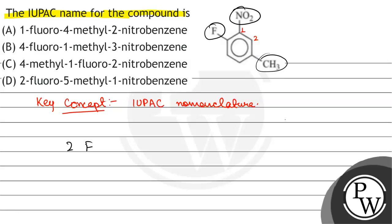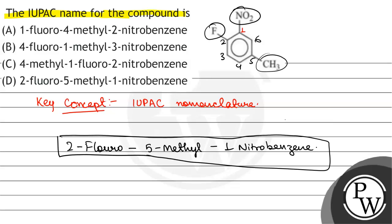Because NO2 is a functional group and these two are the substituents. So the substituents are at 2, then 3, then 4, then 5, then 6. So the numbering will be 2-fluoro, 5-methyl, 1-nitrobenzene. So this will be the IUPAC nomenclature.